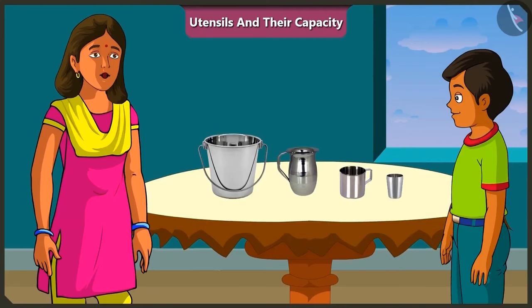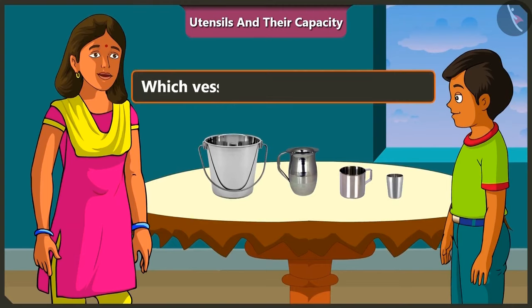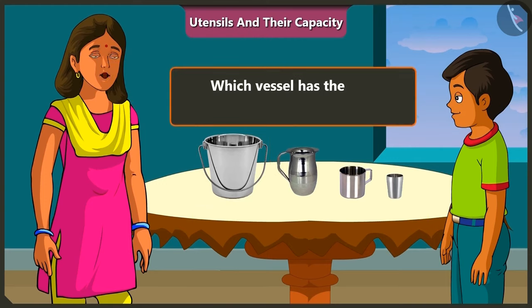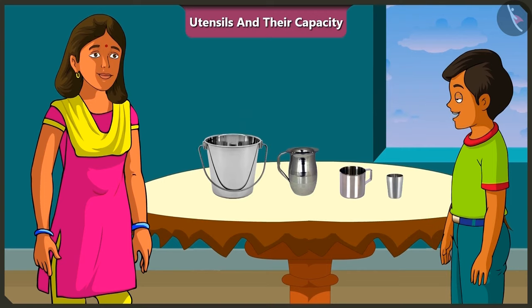Great! Mishtu, now tell me, which of these vessels has the greatest capacity? The bucket has the most capacity. And which vessel has the least capacity? The smallest vessel is the glass, so the glass has the least capacity.